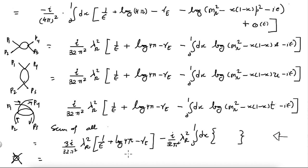This is one reason why people go to higher orders in perturbation theory: the dependence of the calculated observables on the scale μ and on the scheme becomes less and less as you include higher order terms, because if you could sum to all orders the result should not depend on such choices. This dependence goes down as you include higher orders in λ_r.